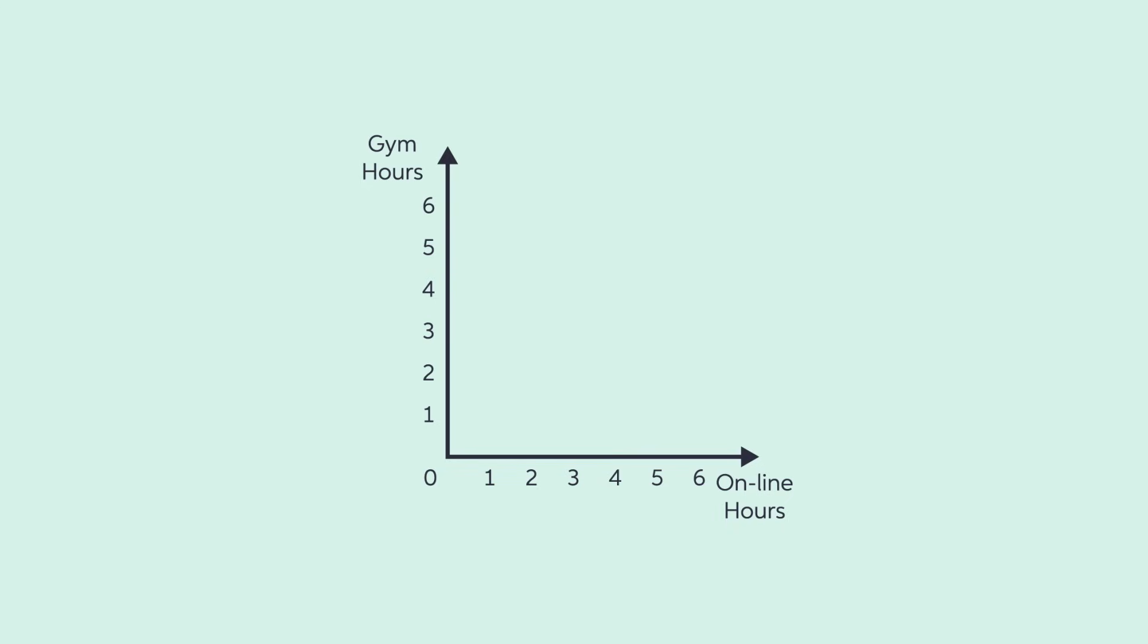Garrett consumes hours at the gym and hours online gaming with friends. He is also a busy student who can only afford 6 hours per week for these two activities. We can model his budget constraint of time with a simple graph. For example, if he currently spends 3 hours per week at the gym, he can only afford 3 hours per week gaming online.